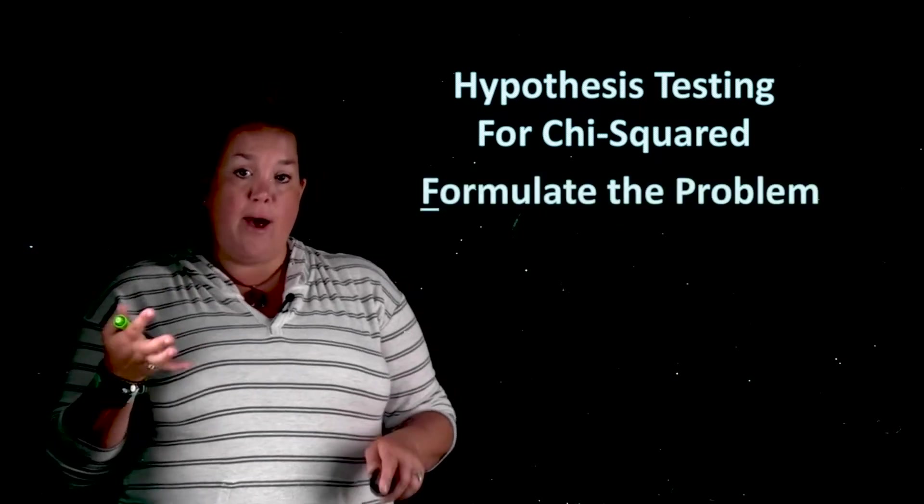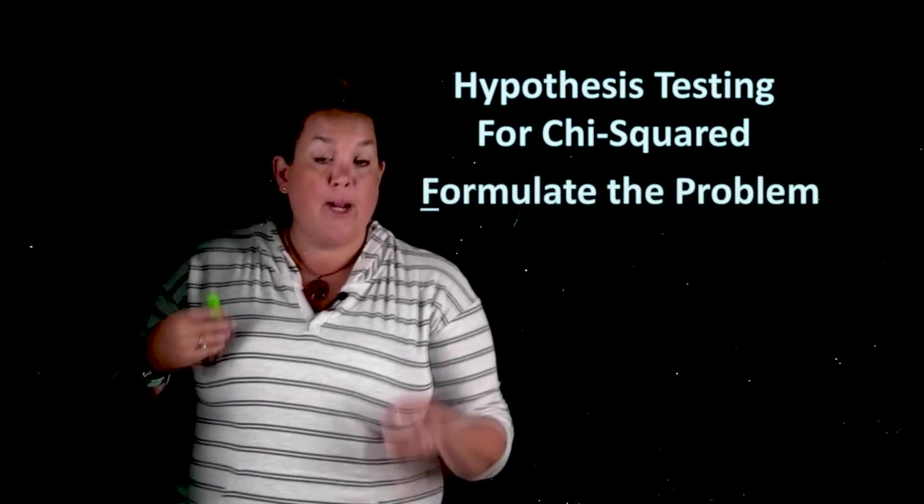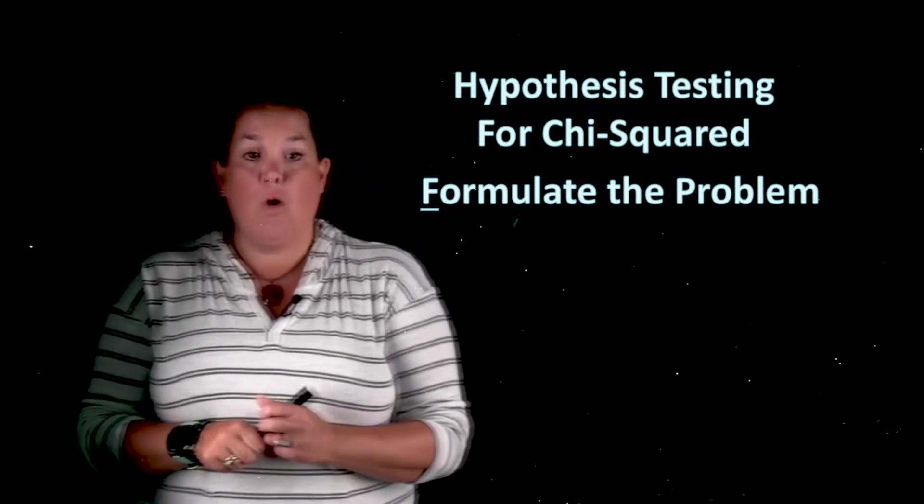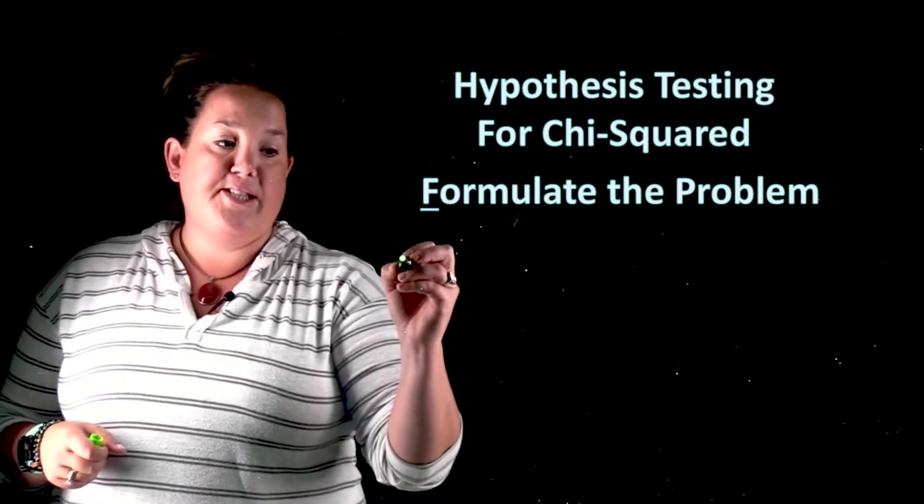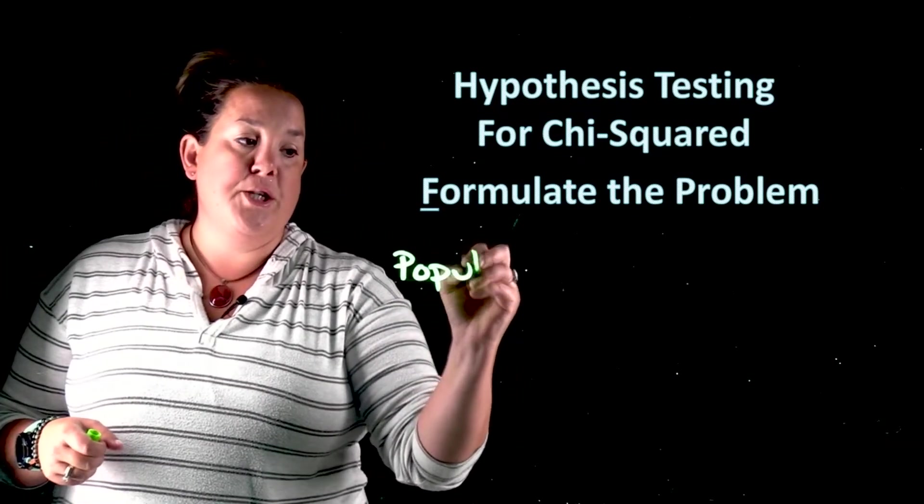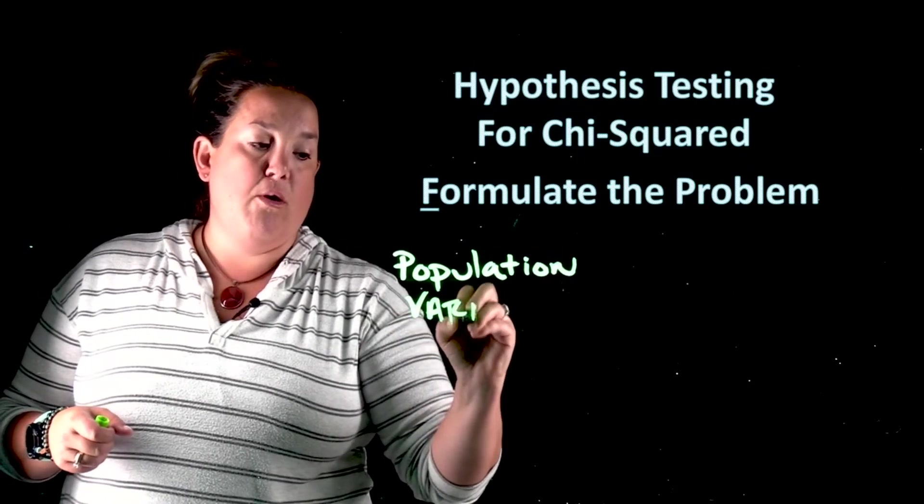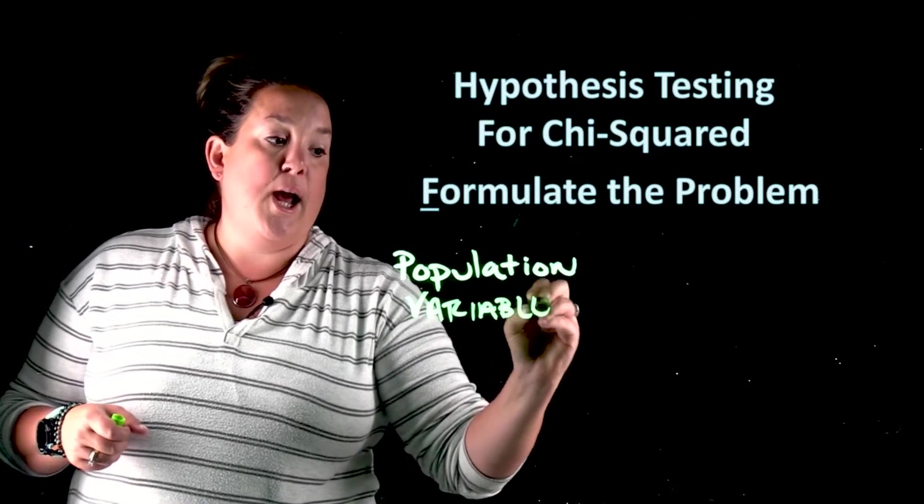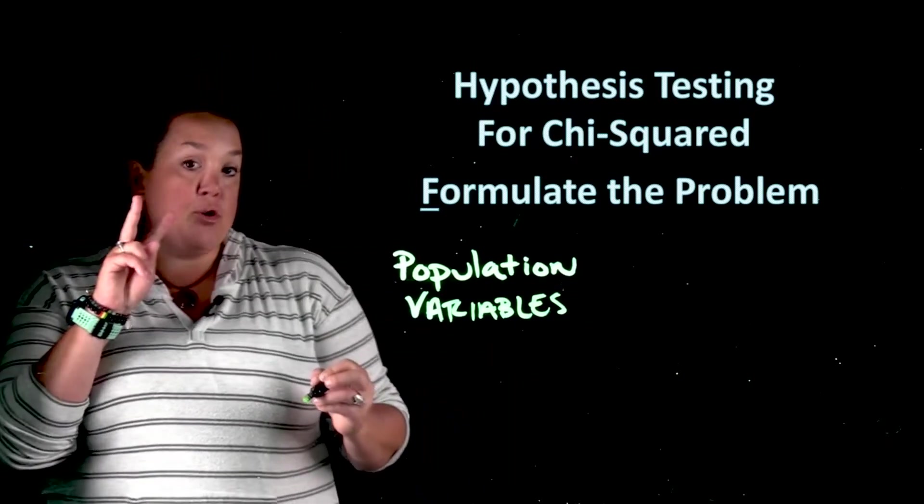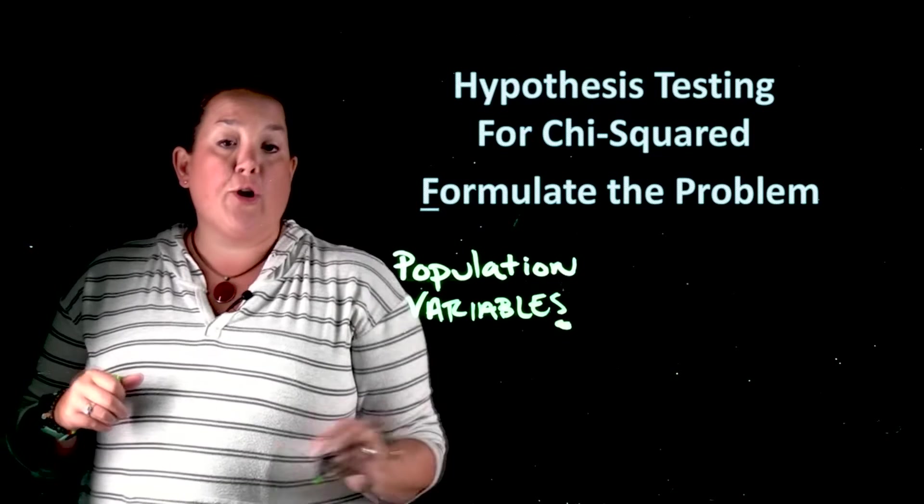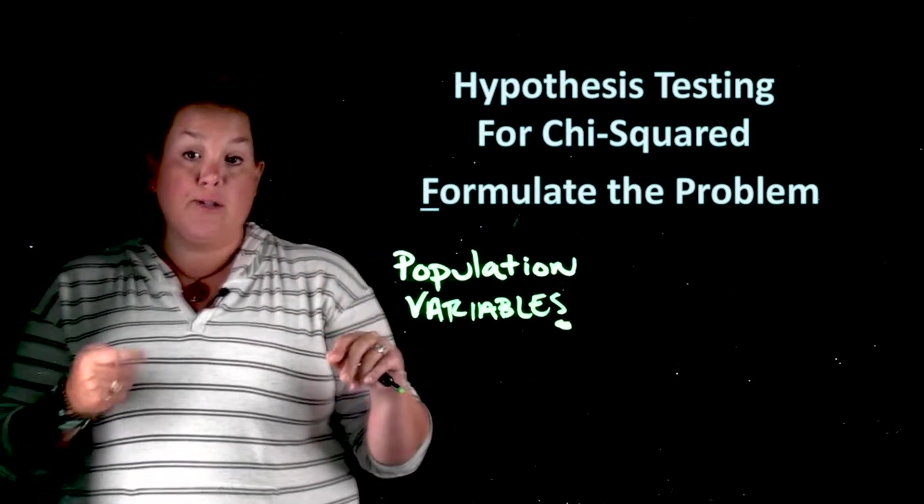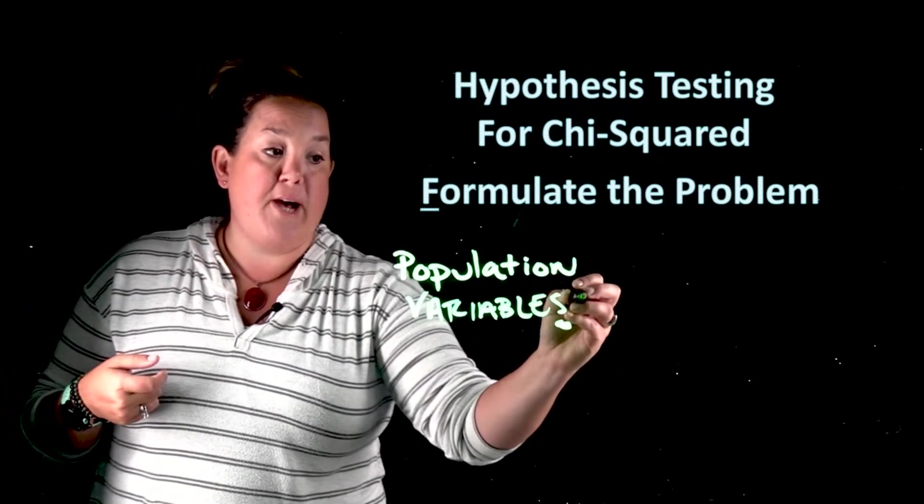Now, we've done this lots of times before. The first thing that you need is to state the population. And then the next thing that you'll do is state the variable or variables of interest. Now, here, because we're talking about two categorical variables, you're going to be stating two variables here instead of just the one like we've had in the past.